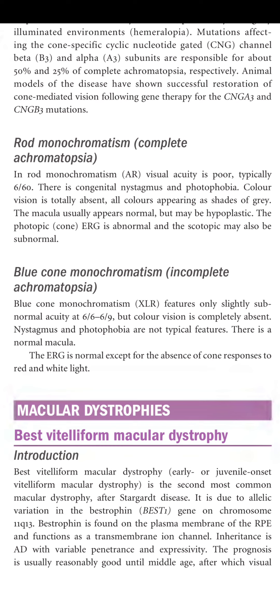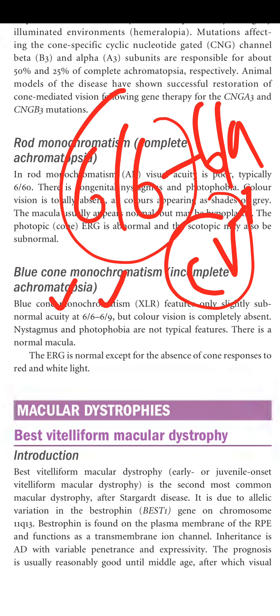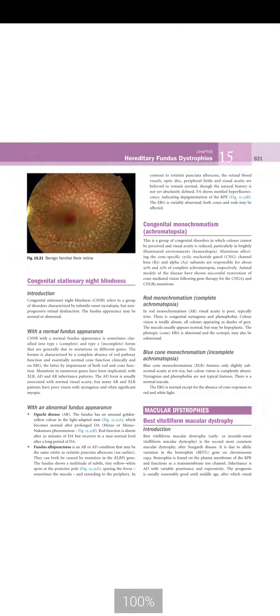Blue cone monochromatism is incomplete achromatopsia — X-linked recessive. Visual acuity is only slightly subnormal at 6/6 to 6/9. Color vision is completely absent but nystagmus and photophobia are not typical features. The macula is normal. The ERG is normal except for absence of cone response to red and white light.